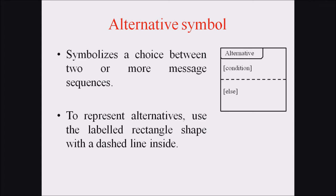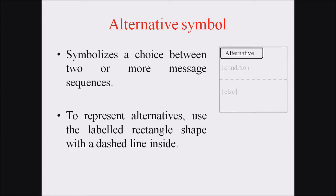The next symbol is the alternative symbol. The alternative symbol represents a choice between two or more message sequences. It is represented by a labeled rectangular shape with a dashed line inside, where the dashed line represents the if-else condition — that is, an alternate condition between two or more available procedures.